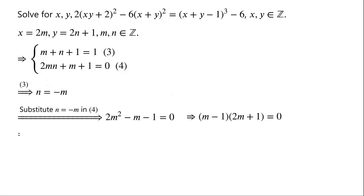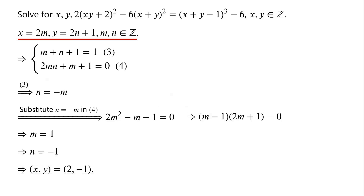Then n equals negative 1. Because x equals 2m and y equals 2n plus 1, so x equals 2 and y equals negative 1. By symmetry in x and y, (x, y) can also equal (negative 1, 2).